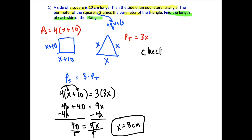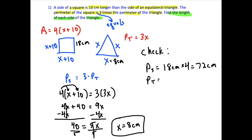To check our solution, we plug everything back in. If x equals 8, then each side of the square is 18 centimeters, so the perimeter of the square is 18 times 4, which gives 72 centimeters. The perimeter of the triangle is 8 times 3, which gives 24 centimeters. And 24 centimeters times 3 gives exactly 72 centimeters, confirming that the perimeter of the square is 3 times the perimeter of the triangle.